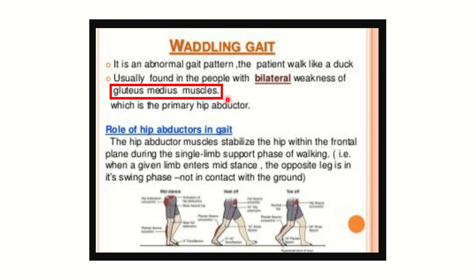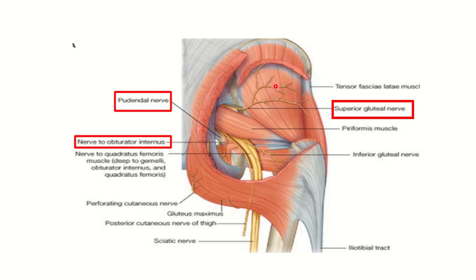We need to find the nerve that innervates the gluteus medius muscle. In this picture, we can see the gluteus medius muscle. In the hip area, there are three large gluteal muscles: gluteus maximus, gluteus medius, and gluteus minimus. We need to find the nerve supplying gluteus medius. Here we can see the superior gluteal nerve, which lies above the piriformis muscle, and it supplies the gluteus medius and gluteus minimus. Superior gluteal nerve injury causes paralysis of the gluteus medius muscle.